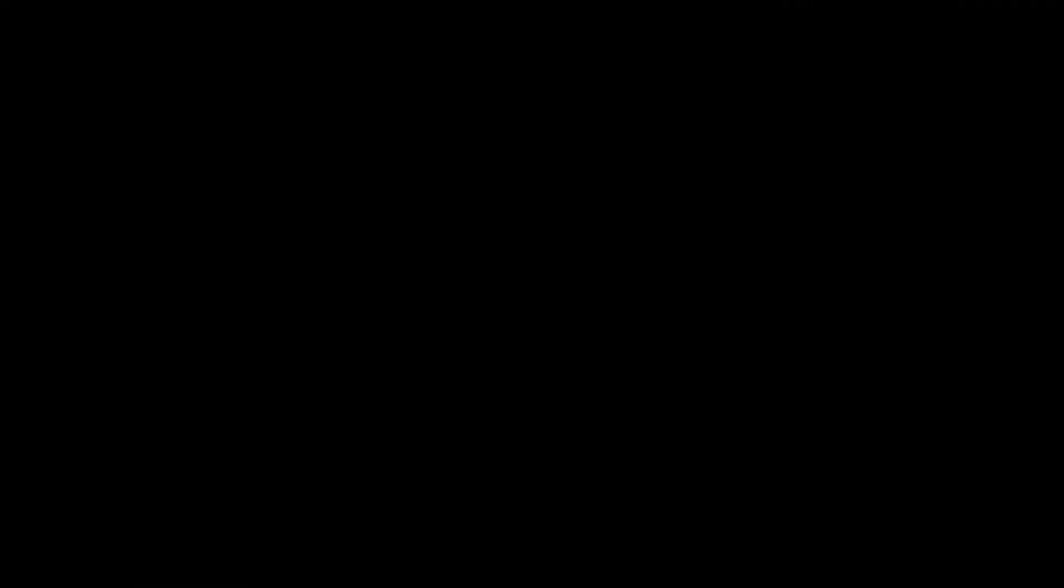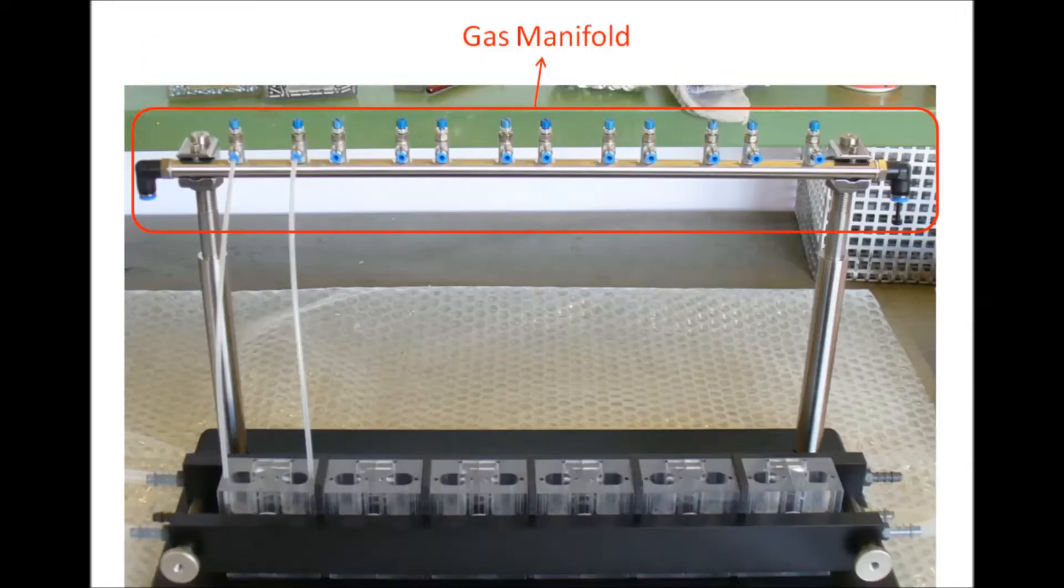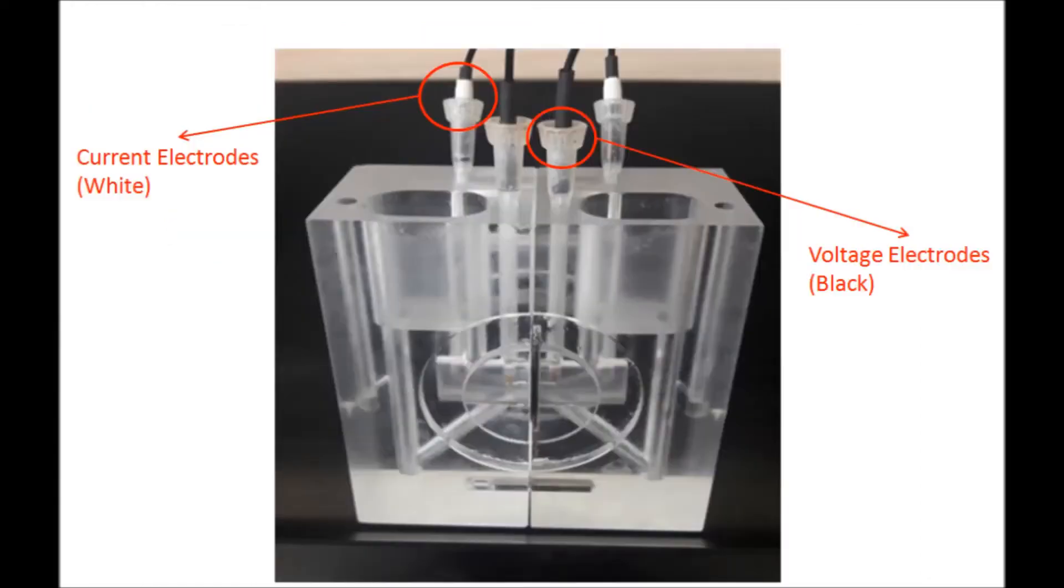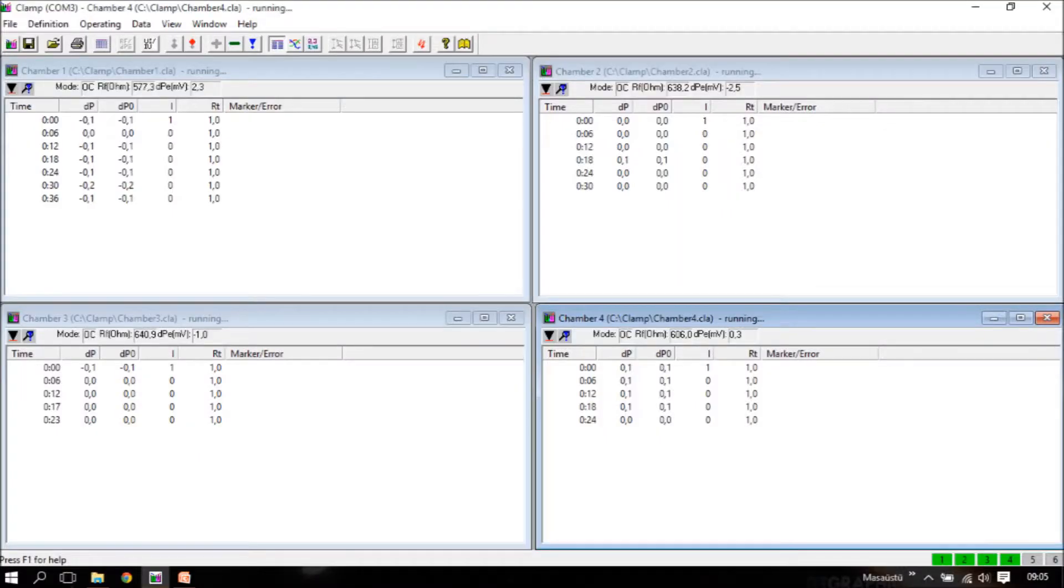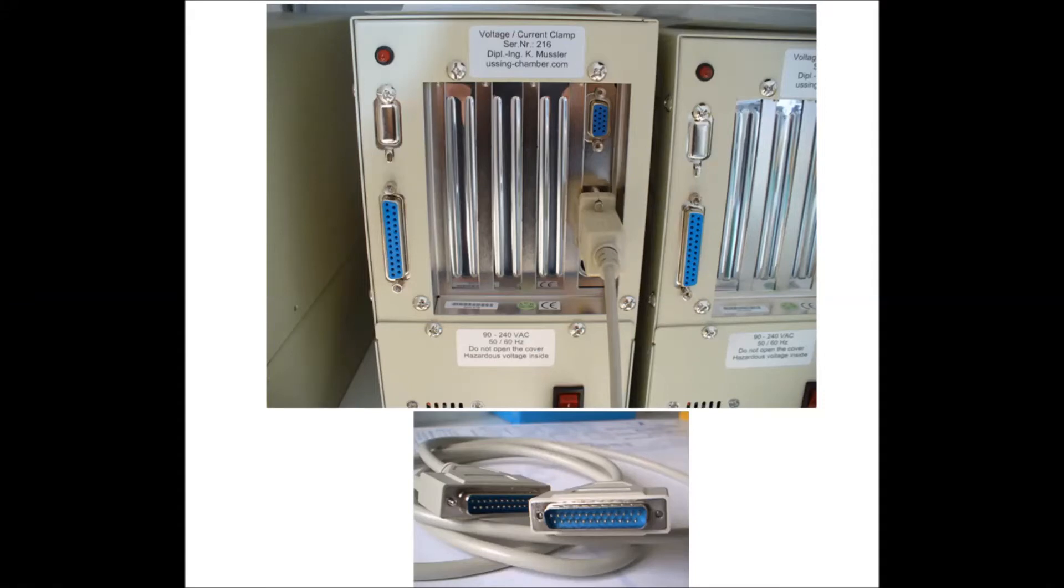The system consists of a heat exchanger, a gas manifold, 6 chambers, current and voltage electrodes, software for the PC, and the data acquisition equipment.